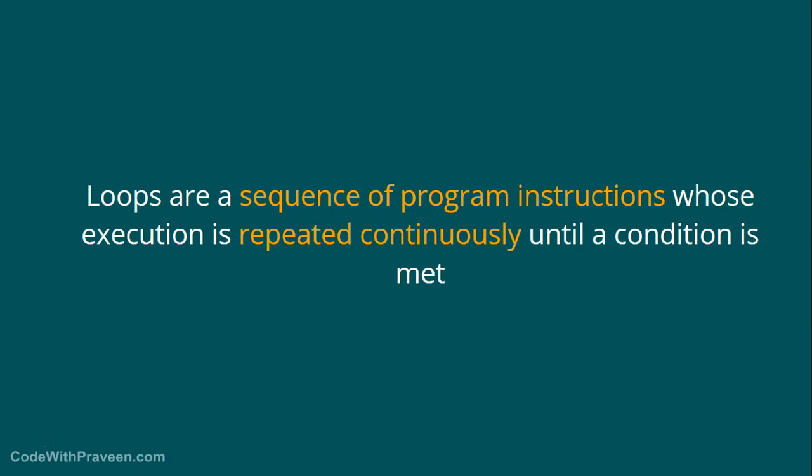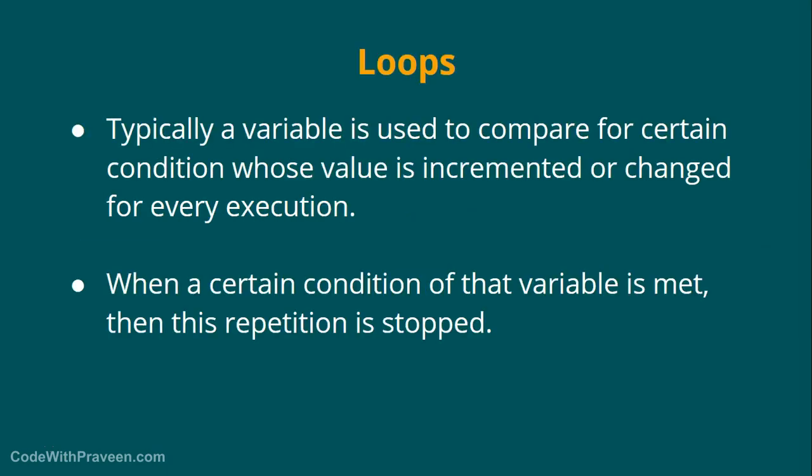That is the place where these loops come into the picture. How these loops are implemented is with the usage of variables. Typically a variable is used to compare for certain conditions whose value is incremented or changed for every execution. These set of statements are executed continuously until those specific conditions are met. When that condition is met, then the repetitions get stopped.